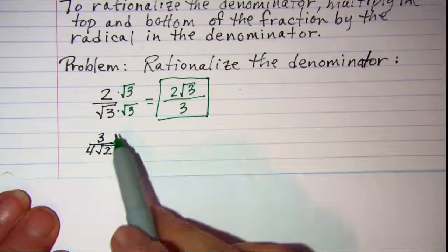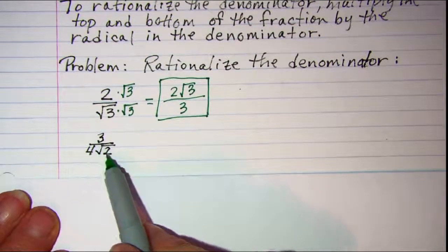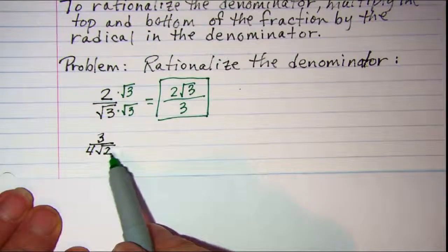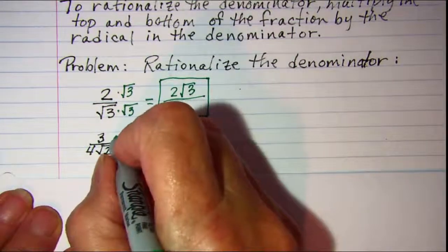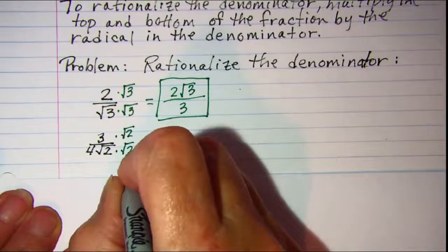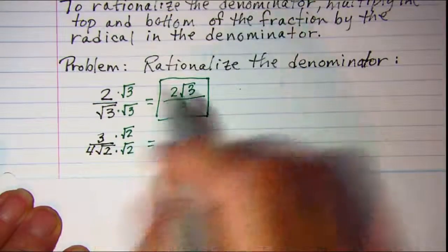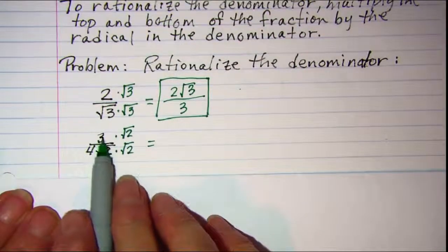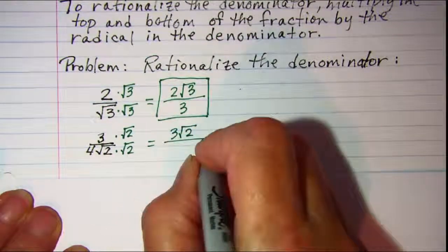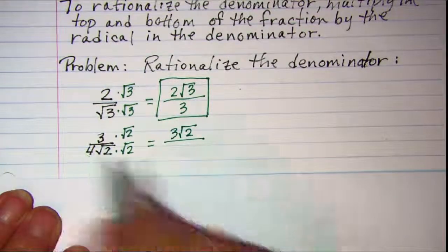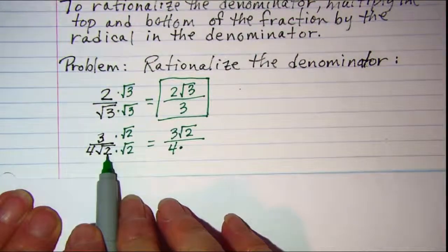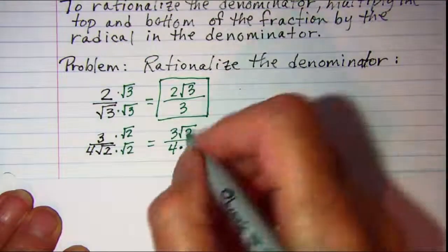My next example I have 3 over 4 root 2. The radical that's in the denominator is square root of 2, so I'm just going to multiply top and bottom by square root of 2. In the top I have 3 times the square root of 2. And in the bottom I have 4 times, and then square root of 2 times square root of 2 is 2.